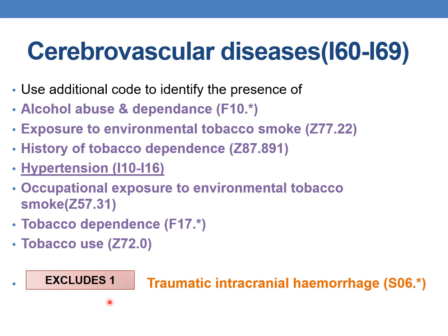There is an Excludes 1 note: you cannot code together the I60 to I69 series with S06. These cerebrovascular accidents are non-traumatic — you cannot code traumatic intracranial hemorrhage along with cerebrovascular accidents. Hence it is indicated by Excludes 1, which means you cannot code these two conditions together.